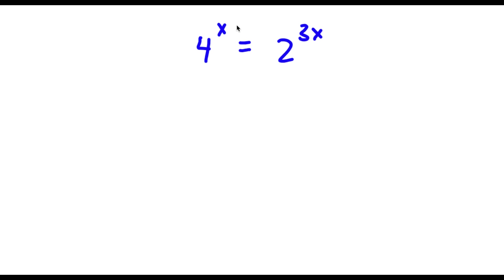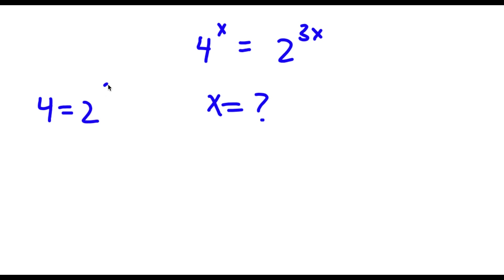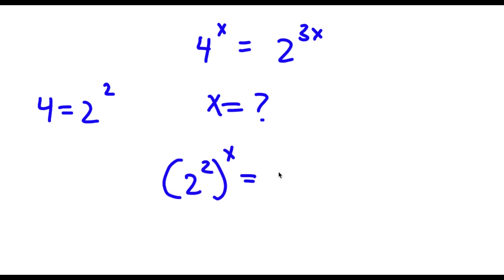Alright, so I have 4 to the power of x is equal to 2 to the power of 3x. I want to find the value of x here. Now, 4 is the same thing as 2 to the power of 2. So if I replace 4 with 2 to the power of 2, I get 2 to the power of 2 to the power of x is equal to 2 to the power of 3x.